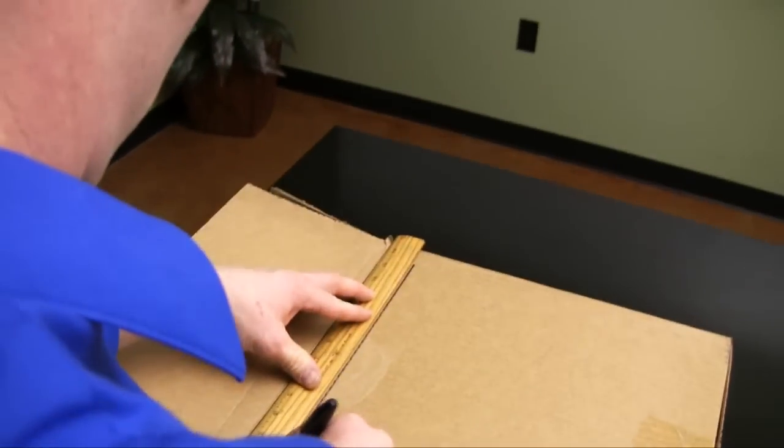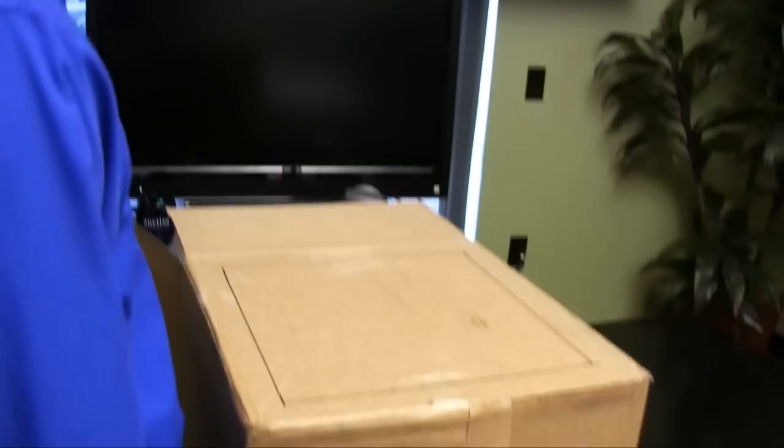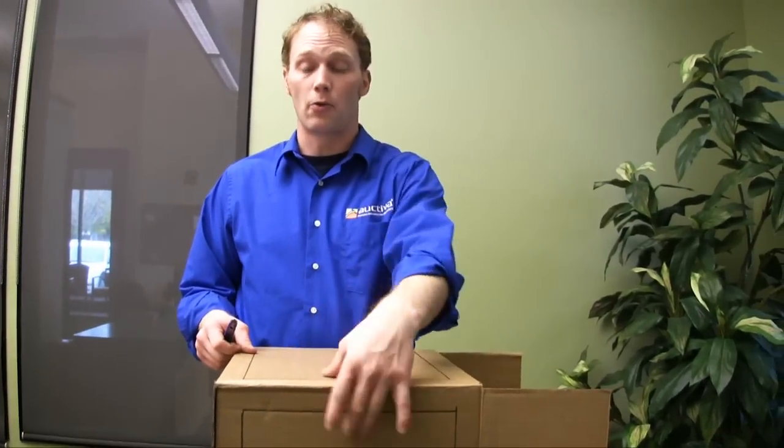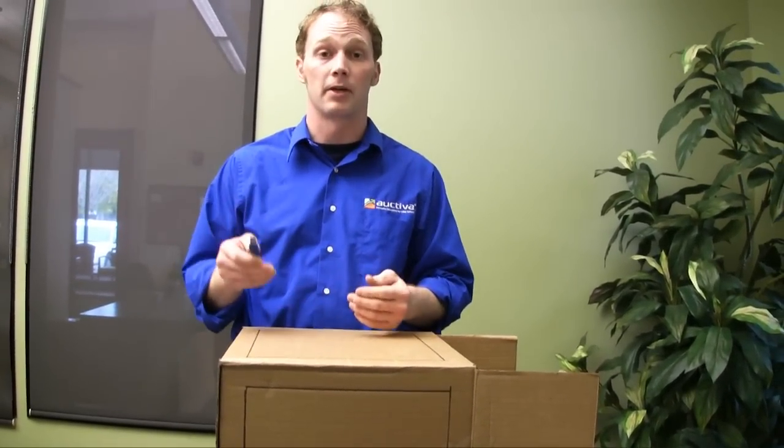I will be marking three sides of the box and leaving one side of the box blank as well as the bottom of the box. Alright, now that I've drawn the squares on the three sides that I'm going to cut out, it's time to cut them out.